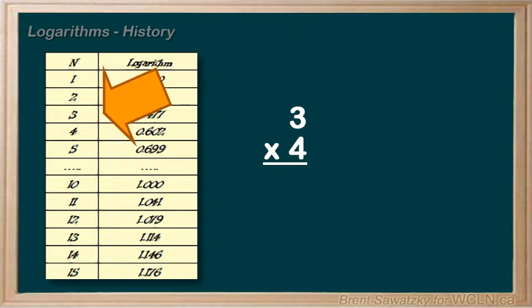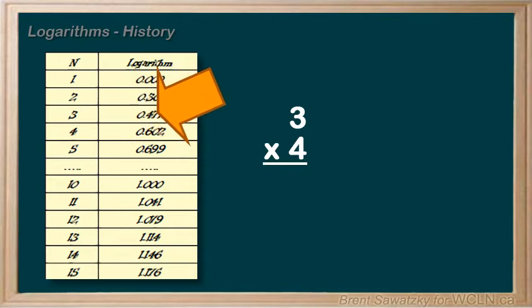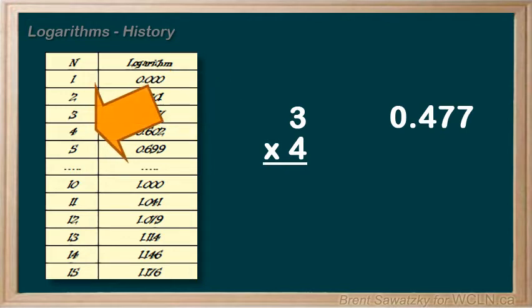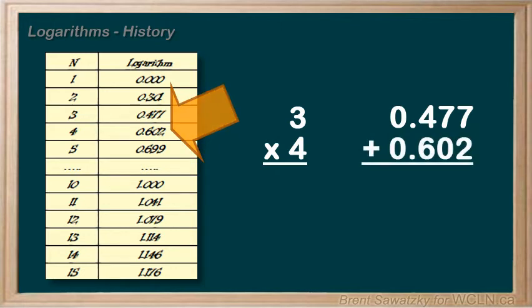We look it up in our logarithmic table, and we find 0.477. Next, we look up the 4. And here we have the 4, and it is 0.602.